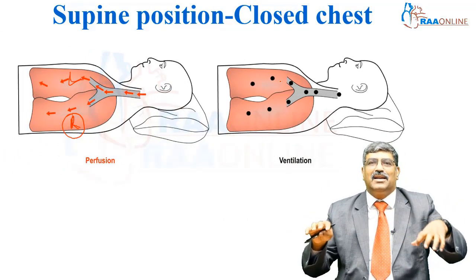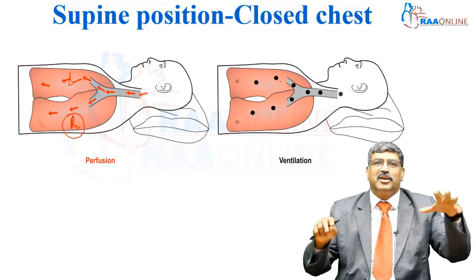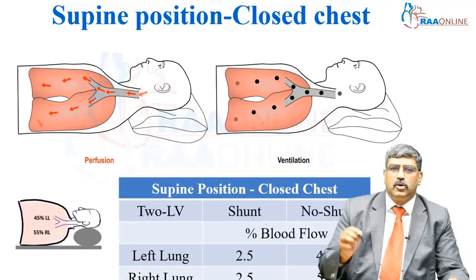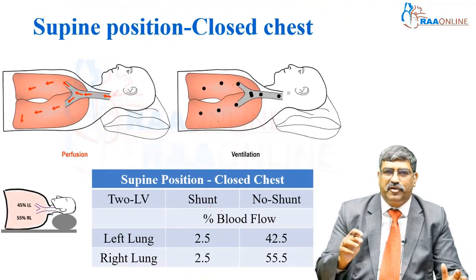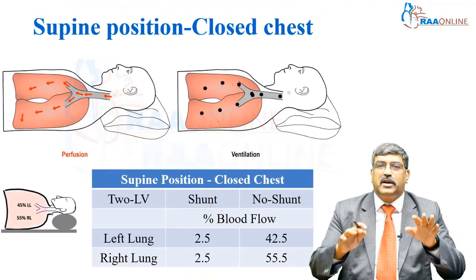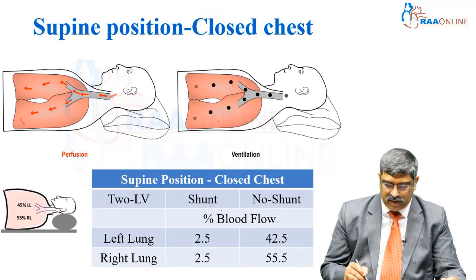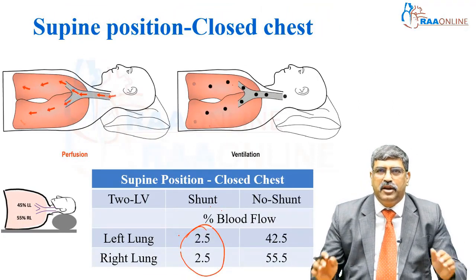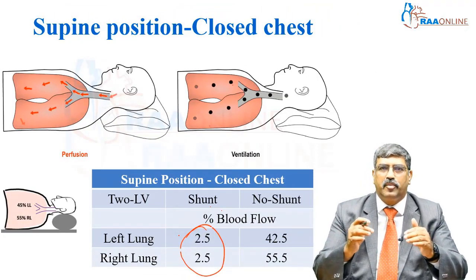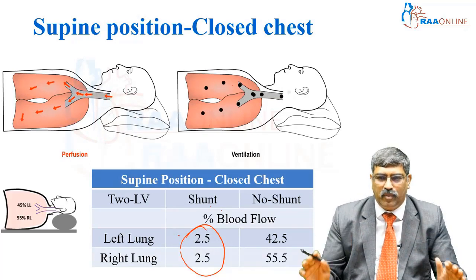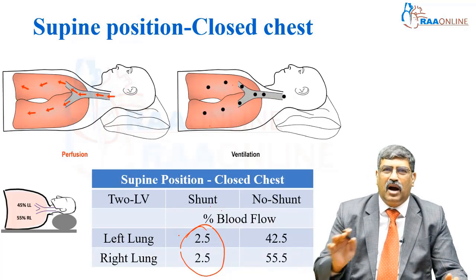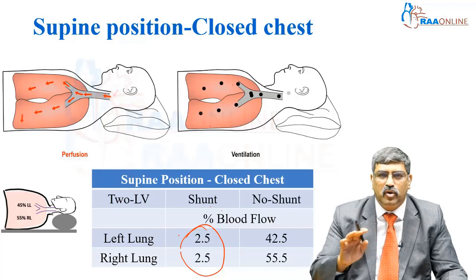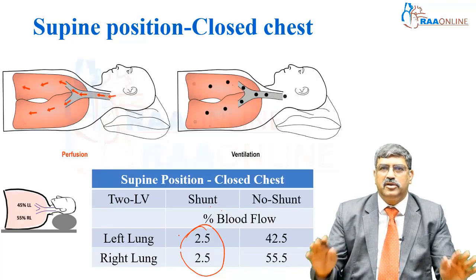The perfusion might be slightly larger on the right side because the right lung is slightly bigger. In summary, in supine position with closed chest, there is not much shunt — both lungs contribute to an equal and insignificant amount of shunt. In supine position, you don't have much of a problem.